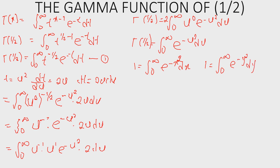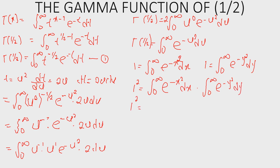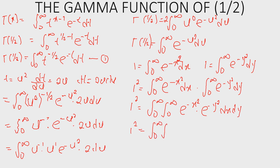Next, you multiply the two expressions for I, so I squared is now the integral of e raised to the power of minus x squared dx, multiplied by the integral of e raised to the power of minus y squared dy. We can see that we now have a multiple integral. So I squared equals the double integral of e raised to the power of minus x squared plus y squared, dx dy.